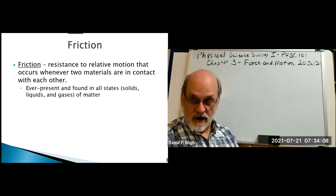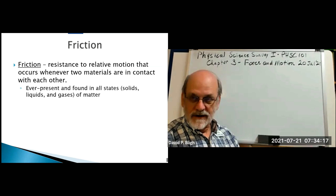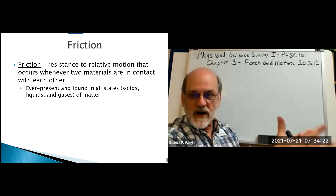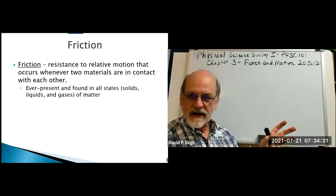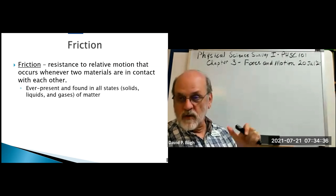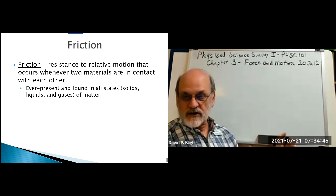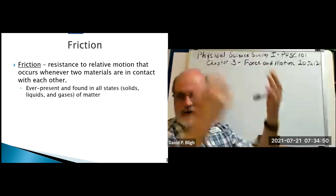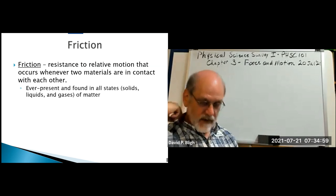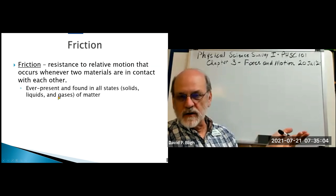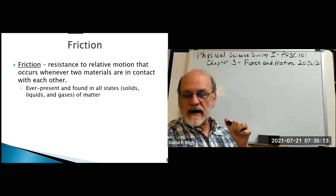Friction between tires and road applies the force that changes the car's direction. When rolling, we want as little friction as possible. And friction isn't only from solid surfaces — anytime you move a solid object through a fluid you get friction, called hydrodynamics. When air moves across the car you also get friction, which increases as speed increases. The materials can be any type: two solids, solid-liquid, solid-gas, liquid-gas, or two gases. You always get that interaction causing friction and opposition to relative motion.